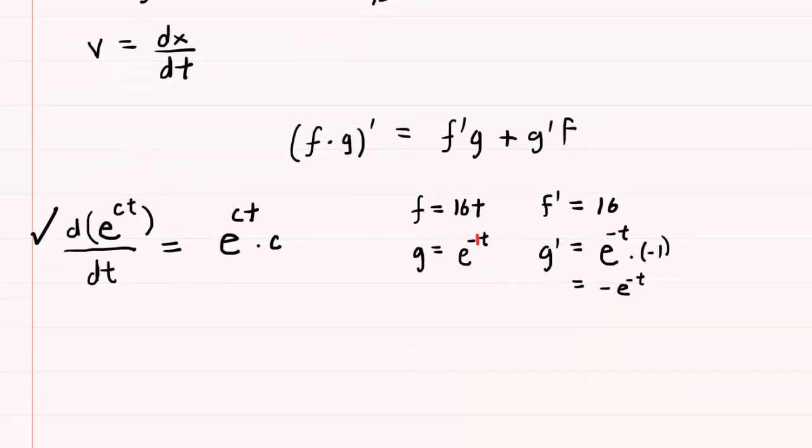Now that we have all of the components of our product rule, we're going to follow the f'g plus g'f format. So the derivative of the position function with respect to time, which is equal to the velocity, will equal f prime, which we determined was 16, multiplied by g, which was e to the negative t, plus g prime, which was negative e to the negative t, multiplied by f, which was 16t.